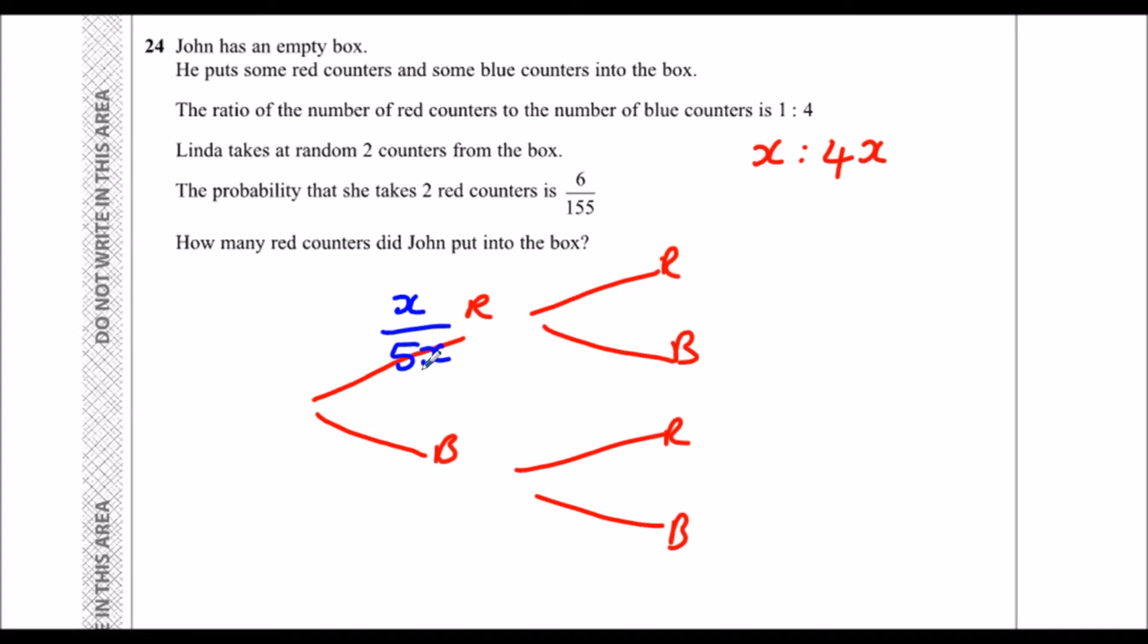And then if I was going to take a second red counter, how many would I have? So I'd have x minus 1 reds over 5x minus 1 in total, because I've taken 1 out, so there's 1 less red and 1 less in total. And that equals 6 over 155.